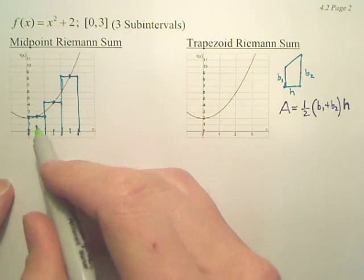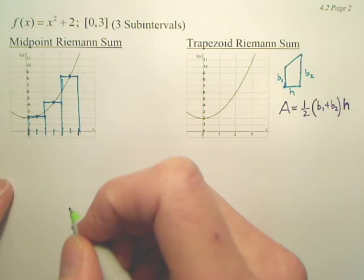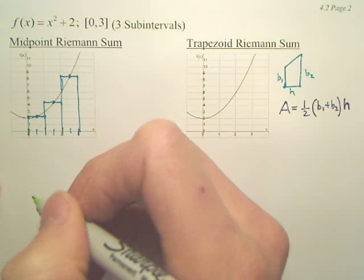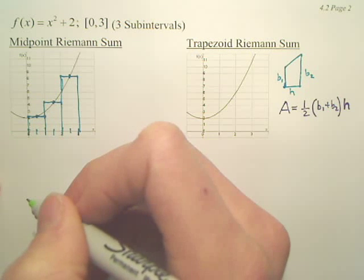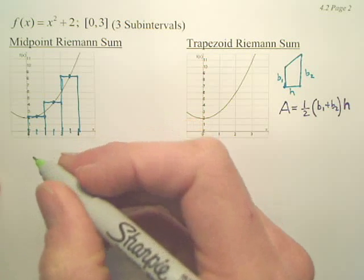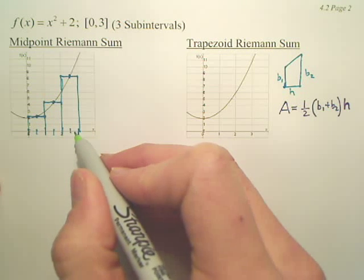Now, is it easy to tell the height by looking at the graph of each rectangle? No. So for this particular problem, you're going to have to plug it into the equation. What is the width of each of these boxes? The width is 1.